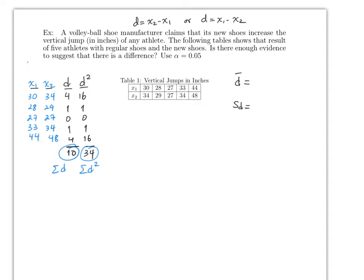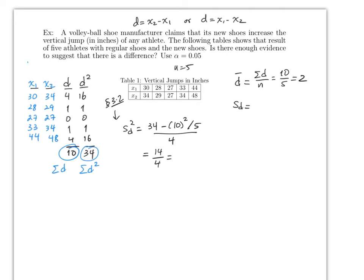D-bar equals the sum of D divided by n, so 10 divided by 5 equals 2. For the variance, using the Section 3.2 formula: the sum of D-squared (34) minus the sum of D squared divided by n (10 squared divided by 5), all divided by n minus 1, equals 3.5. The variance is 3.5, so the standard deviation S_D is the square root of 3.5, which is approximately 1.9.